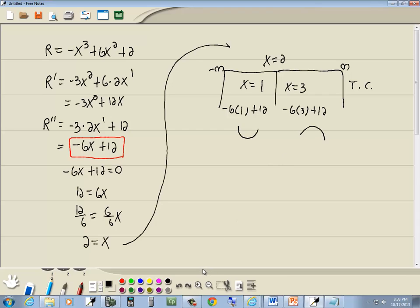Now your point of inflection, which is also our point of diminishing returns, is where the concavity changes. See how this is concave up, and this is concave down? Well, that means we've got a POI, point of inflection at x equals 2.